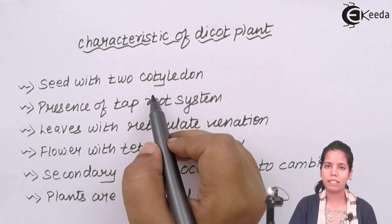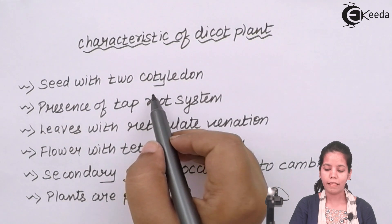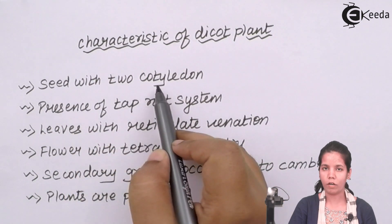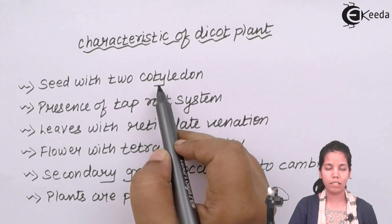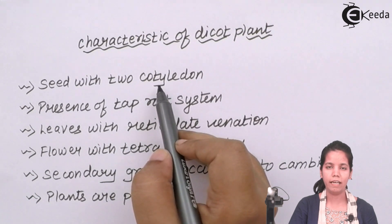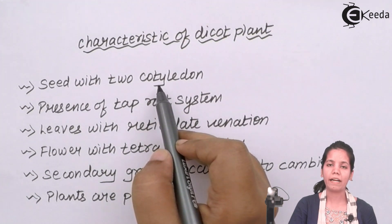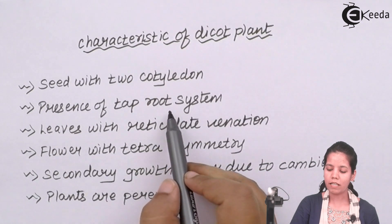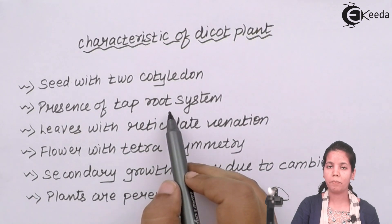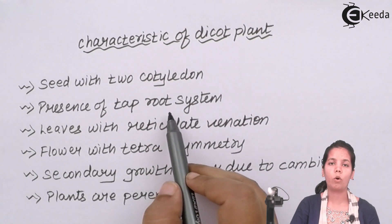All the dicot plants have certain characteristics in common. They have seeds with two cotyledons, or you can say two different embryonic parts. When you put those seeds into soil, they will form a small overgrowth which is the radicle, and this radicle will get nutrition from the cotyledon, which acts as a source of food for the initial period of growth until the roots have come. There is a presence of a tap root system with primary, secondary, and tertiary roots, along with root cap and all associated regions.